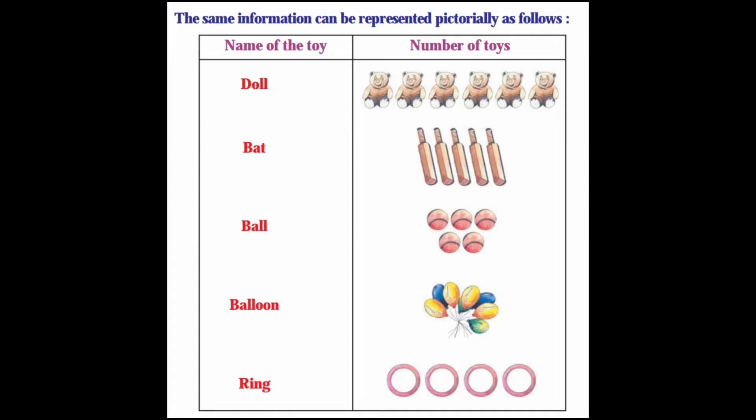Now we represent the data from the table in pictures as a pictograph. Name of the toy and number of toys: Doll is 6, Bat 5, Ball 5, Balloons 8, Rings 4. This is how we draw the pictorial representation.